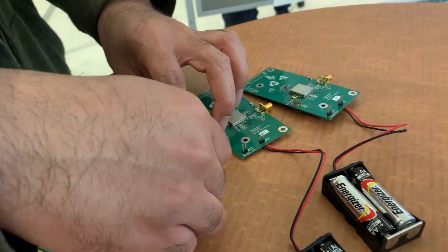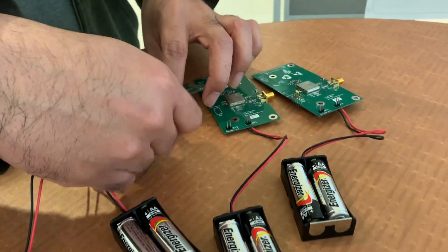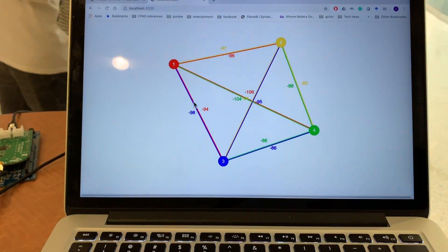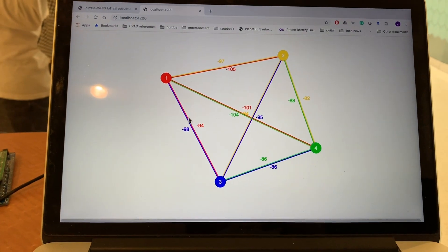Now we will show how the network automatically adapts to the change of the signal strengths from the sensor nodes. We connect the antenna to node 4, which is green on the laptop screen. The antenna will amplify the signal from node 4.